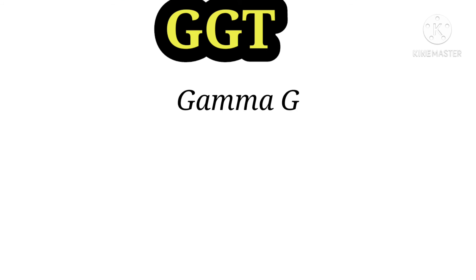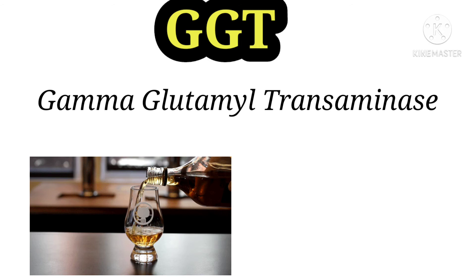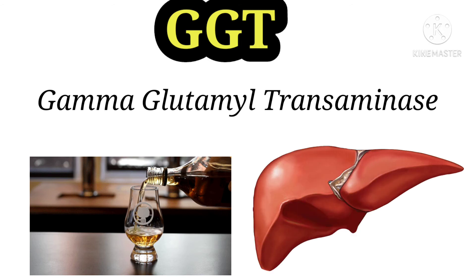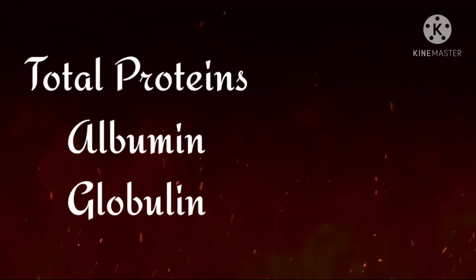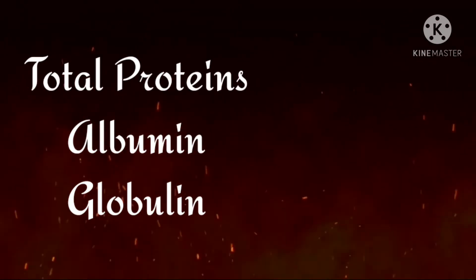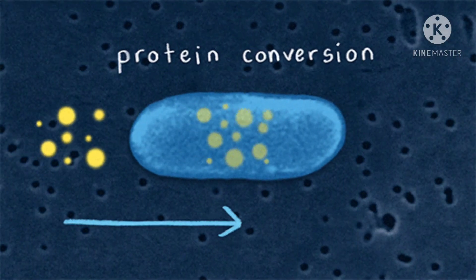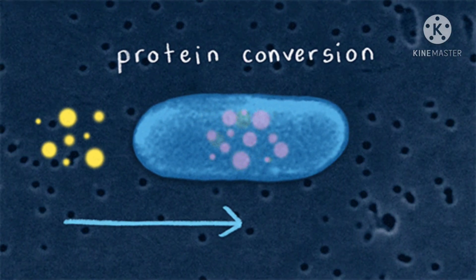GGT, or gamma glutamyl transferase, is synthesized in the liver. Whenever there is liver destruction — especially in alcohol-induced liver problems — gamma glutamyl transferase is increased. In liver function tests, we also assess total protein levels, specifically albumin, globulin, and the albumin-globulin ratio.